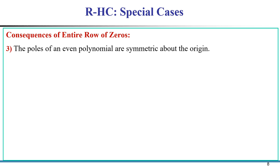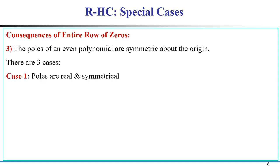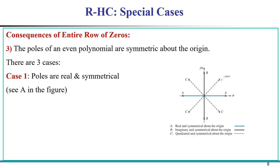An important point: the poles of an even polynomial are symmetric about the origin. There are three cases. If the poles are real, they appear as one positive and one negative real pole. If there is no sign change in the table, we can expect the poles are only on the imaginary axis with no real pole in the right half s-plane.